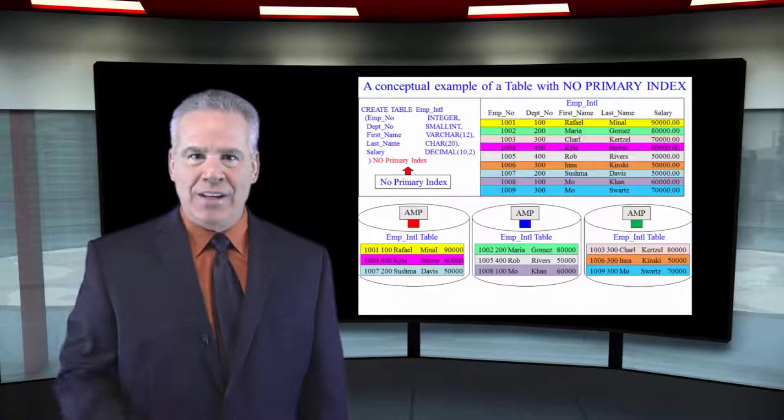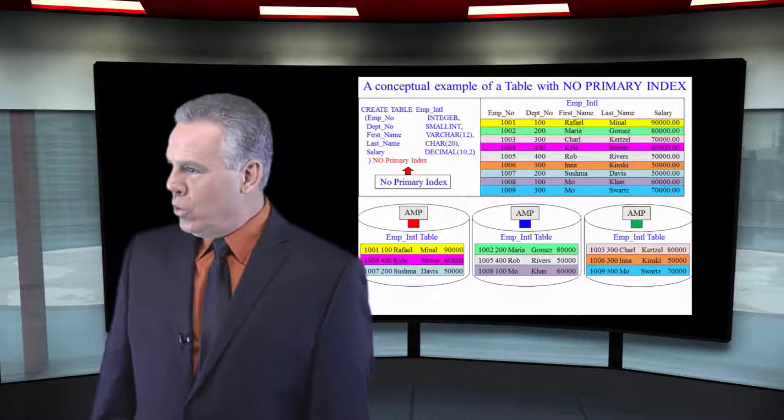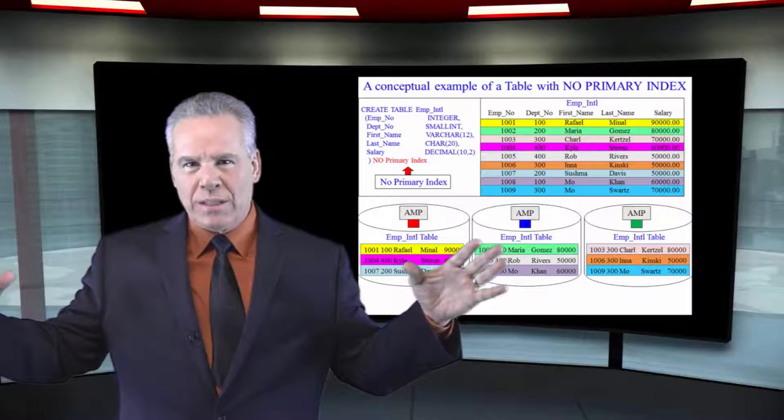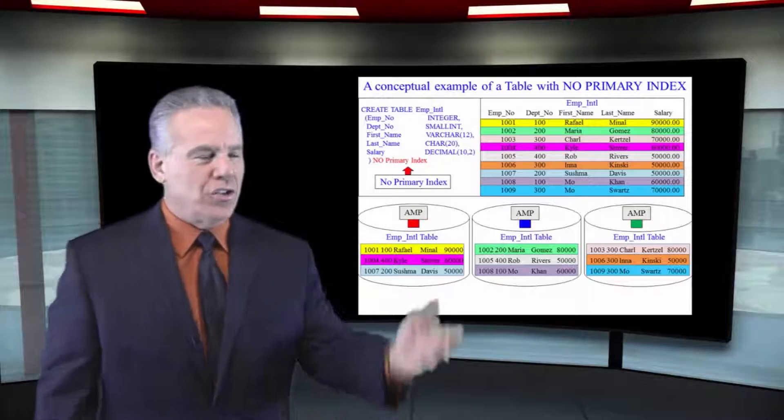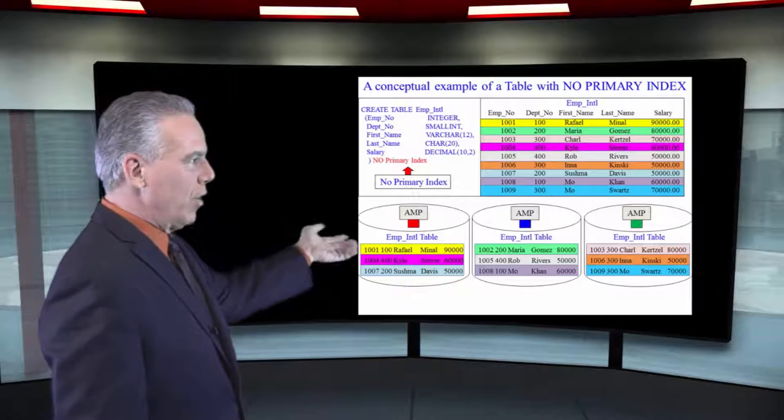When Netezza was invented, Teradata said, well, you know, it's a new technology, let's take a look at it. And they go, ooh, they distribute on a random distribution? That's pretty clever, because they're going to get even distribution. So Teradata has come up with a no primary index.